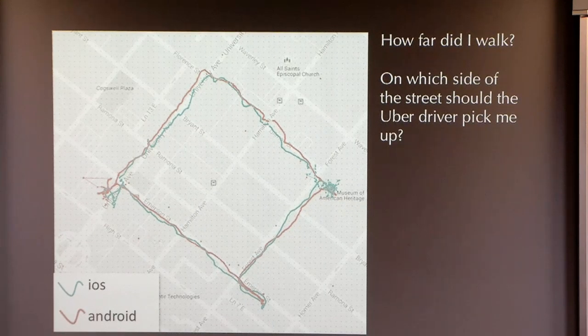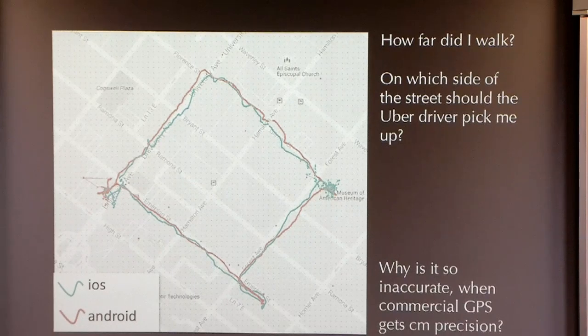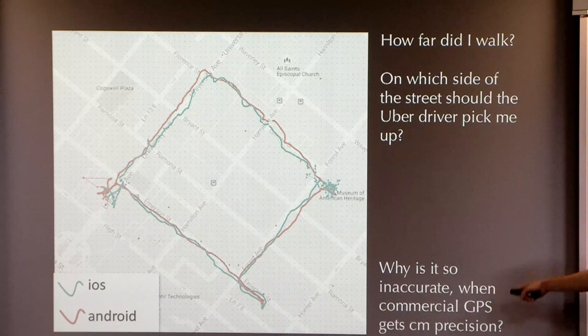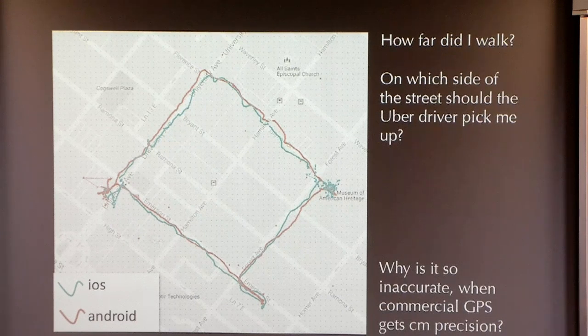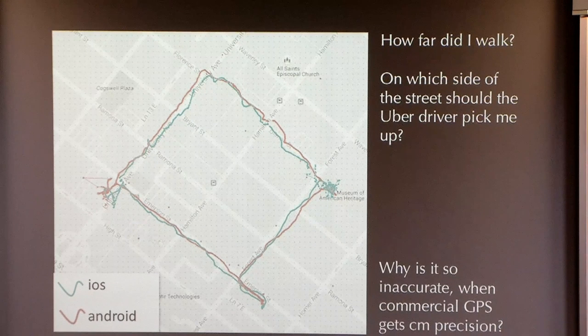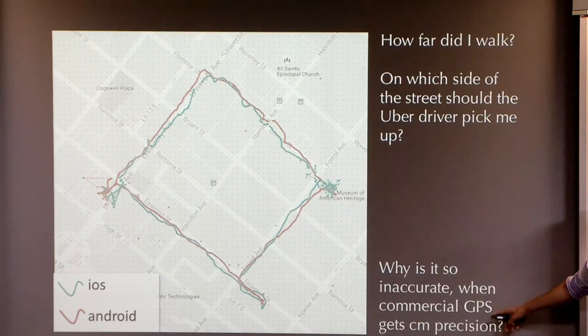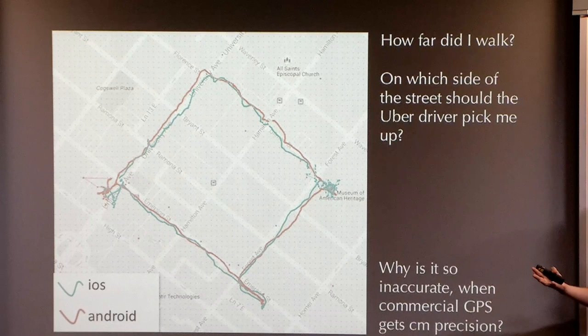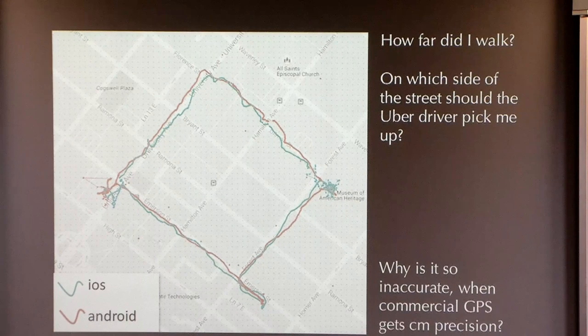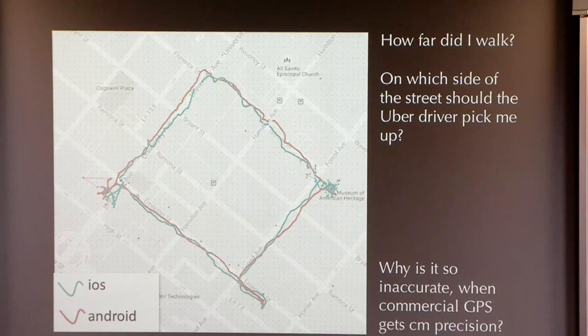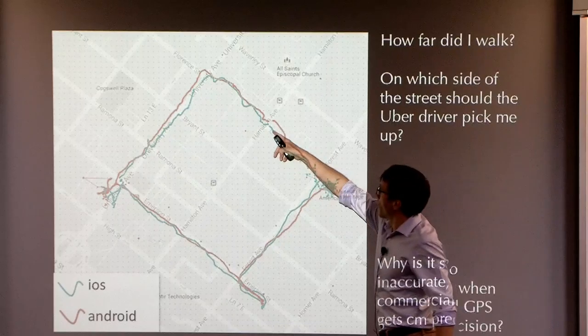I guess another question from this, a meta question, is why is this so crummy when commercial GPS, by commercial GPS, I mean the stuff that farmers use, stuff that military uses, the stuff that ships use, that gets centimetre precision? So the satellites can give you centimetre precision. You can get receivers, which give you centimetre precision. And what we have in our phone is off by 20 metres.